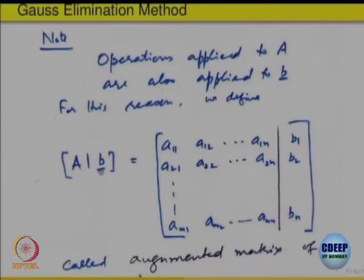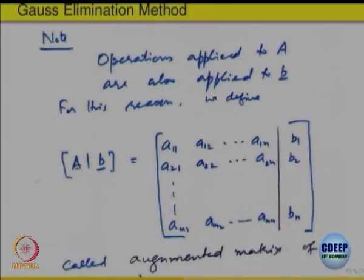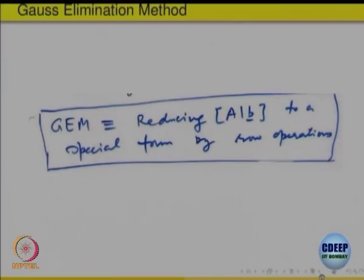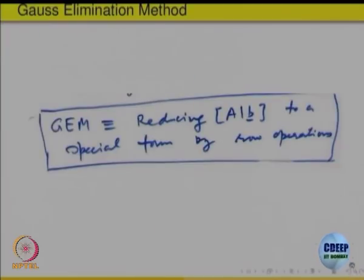To keep track of A and the vector b together, we form a new matrix. A is m×n and b is m×1. The row operations done on A are also done on b. So we operate on the combined matrix [A | b], reducing it to the special form. This combined matrix is called the augmented matrix, because we have added one more column to A. Gauss elimination method is summarized as reducing this augmented matrix to a special form by elementary row operations.